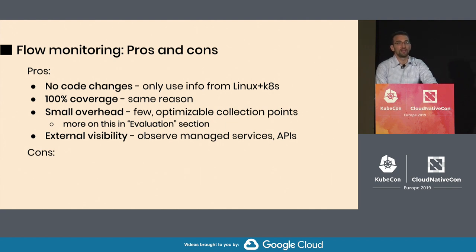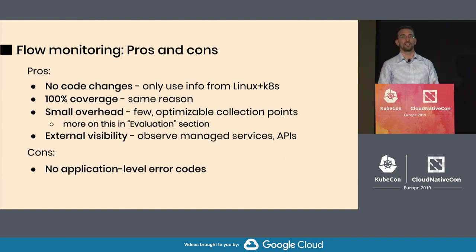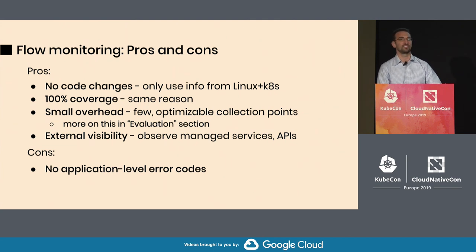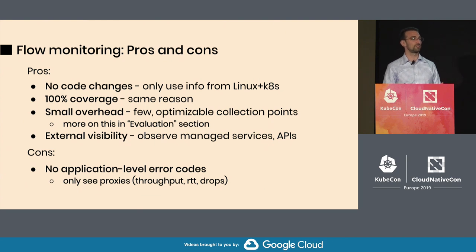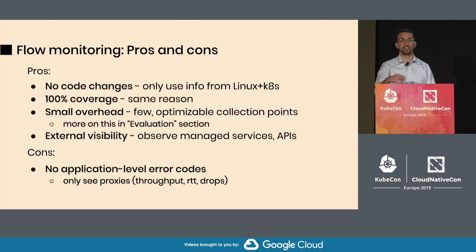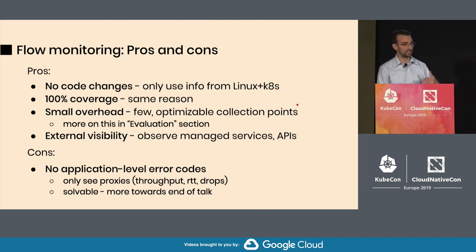The disadvantage - there's one major disadvantage. The flow data doesn't collect application layer error codes or metrics at all. Usually when you operate for a business purpose, you want to understand how users are experiencing the application, what's failing and what's not. You can get proxies - we found that throughput of a service is a proxy for service health, because once the service starts sending 400 or 500 error codes, the error responses are tiny compared to regular payloads, so you immediately see a drop in throughput. But still, it's a proxy. I'll discuss towards the end of the talk how you could solve that.